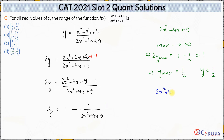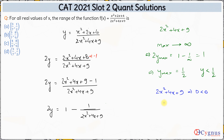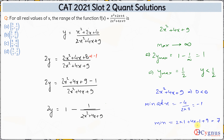Next, let's calculate the minimum value of 2x² + 4x + 9. The discriminant is b² − 4ac = 16 − 72 = −56, which is less than 0. Since the coefficient of x² is positive and the discriminant is negative, this graph is always positive and never crosses the x-axis. The minimum occurs at x = −b/(2a) = −4/4 = −1. The minimum value is 2(−1)² + 4(−1) + 9 = 2 − 4 + 9 = 7.